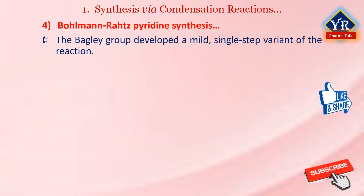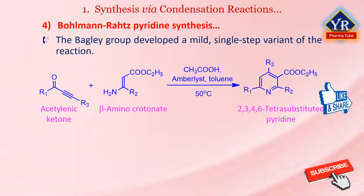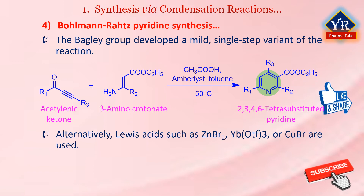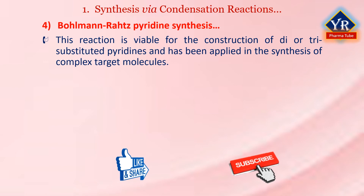The Bagley group later developed a mild single-step variant of the reaction wherein acetic acid or amberlyst ion exchange resin was used to promote cyclo-dehydration at a low temperature, i.e. 50 degrees centigrade, to give 2,3,6-tri- and 2,3,4,6-tetra-substituted pyridines with alkyl, aryl, heteroaromatic, heteroatom, and ester substituents in moderate to excellent yields. Alternatively, one could use Lewis acids such as zinc bromide or copper bromide, iodine in catalytic amounts, as well as a catalytic amount of iodine. Microwave irradiation was also applied in this reaction. The Bohlmann-Ratz synthesis is viable for the construction of di- and tri-substituted pyridines and has been applied in the synthesis of complex target molecules.